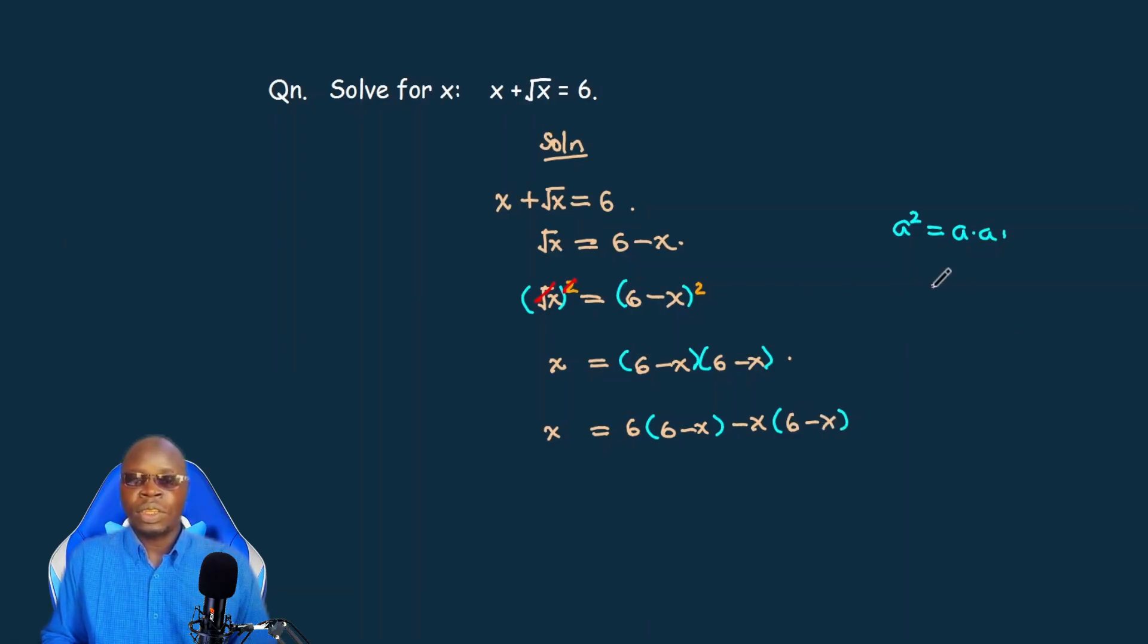By the way, for those who do not want to go all this far, 6 minus x squared, we just do a short form of squaring the first term. And if you square 6 you get 36.